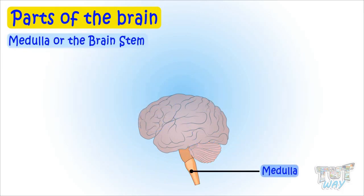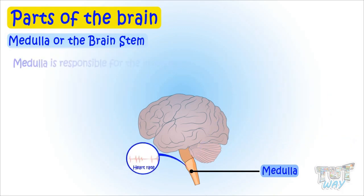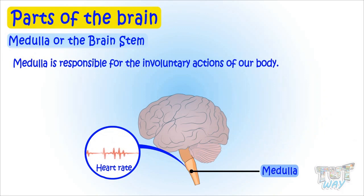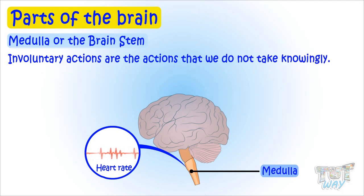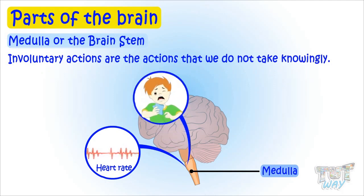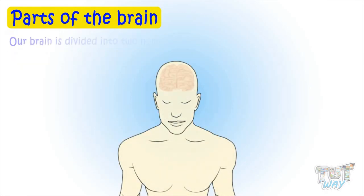The medulla, or brainstem, connects the brain to the spinal cord. It is responsible for the involuntary actions of our body — actions we do not take knowingly, like sneezing, heartbeat, breathing, and movement in the stomach. These functions happen on their own and are controlled by the medulla.